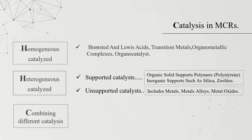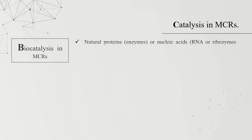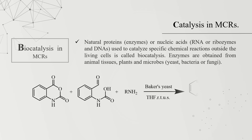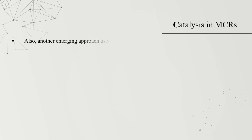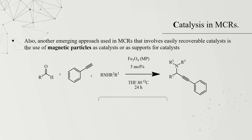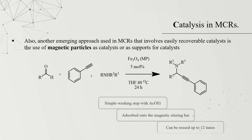Heterogeneous-homogeneous catalysis refers to the combination of two different types of catalysis, where homogeneous catalysis is grafted onto a solid support. Biocatalysis in multi-component reactions uses natural proteins, enzymes, or nucleic acids (RNA, DNA) to catalyze specific chemical reactions outside of living cells. Enzymes are obtained from animal tissue, plants, and microbes like yeast, bacteria, or fungi. Another emerging approach is the use of magnetic particles such as Fe3O4 as catalyst or catalyst support, which can be simply recovered with a washing step with acetic acid, absorbed onto a magnetic stirring bar, and reused up to 12 times.